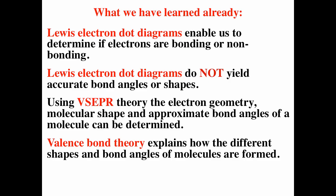Lewis electron dot diagrams enable us to determine if electrons are bonding or non-bonding electrons, but Lewis diagrams do not yield accurate bond angles or shapes. If you understand the shape of the molecule, we use VSEPR theory, which says that the molecule will take the shape that minimizes electron-electron repulsion between the different regions of electron density. Valence bond theory explains how we can go from atomic orbitals to hybrid orbitals, which explain the shapes we see in VSEPR theory.